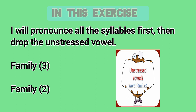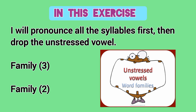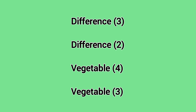In this exercise, I will pronounce all the syllables first, then drop the unstressed vowel. 'Family' — 'family.' 'Difference' — 'difference.' 'Vegetable' — 'vegetable.' Thanks for watching.